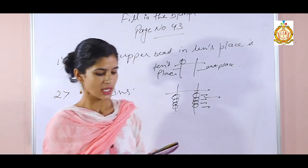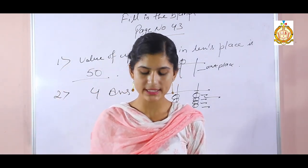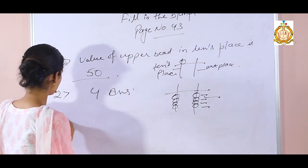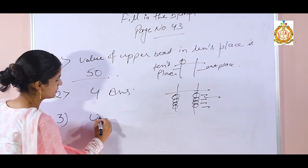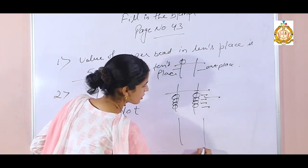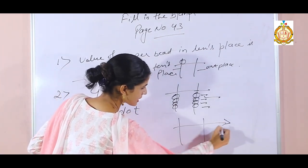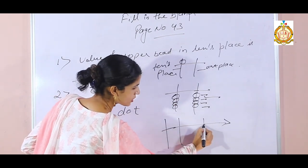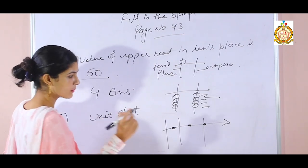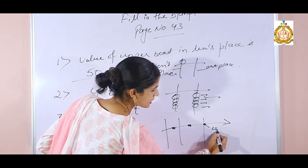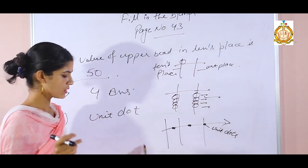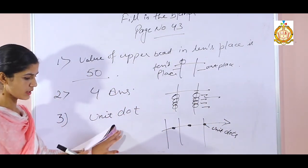Third fill-in: the white dot on an abacus represents what? Some dots are on the answer line — these white dots on your abacus are called unit dots. So the answer to the third fill-in is unit dot.